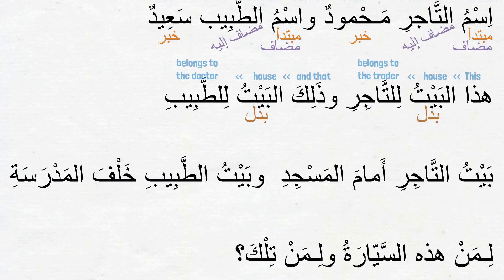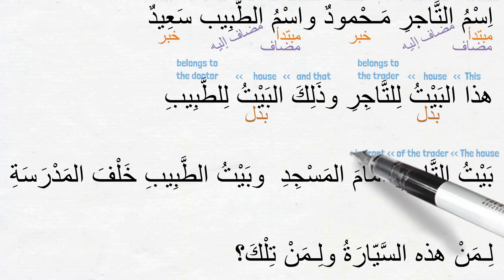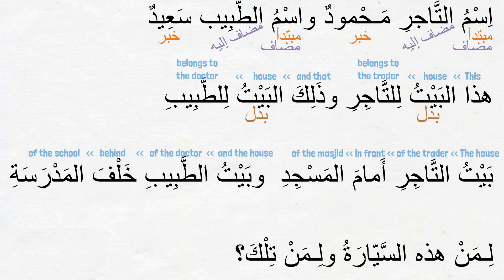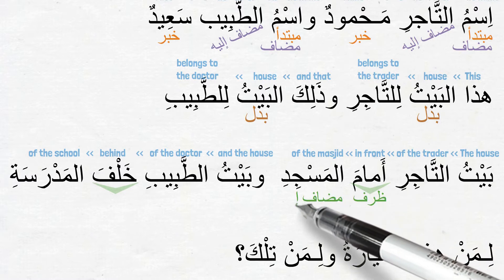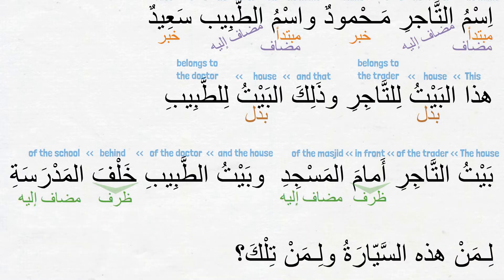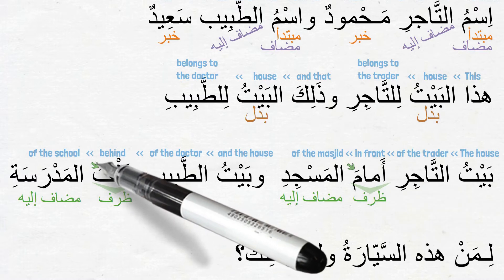Next: بيت التاجر أمام المسجد وبيت الطبيب خلف المدرسة — The house of the trader is in front of the masjid and the house of the doctor is behind the school. If you remember, we briefly talked about أمام in lesson 5 part 3. We learned that أمام means 'the front', and now we are learning خلف, which is the opposite of أمام — so خلف means 'behind'. Both أمام and خلف are ism-type words, and because they indicate place, we refer to the combinations أمام المسجد and خلف المدرسة as ظرف and مضاف إليه. Remember, ظرف is always منصوب, that is why these isms أمام and خلف are ending with فتحة.